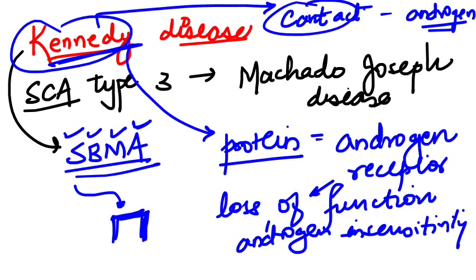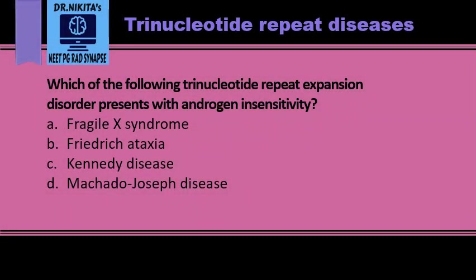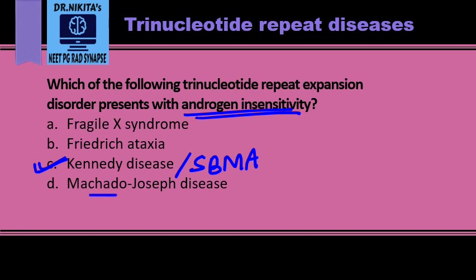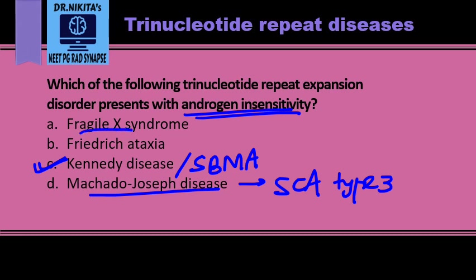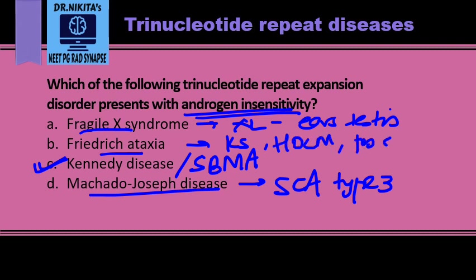A recently asked question: which trinucleotide repeat expansion disorder presents with androgen insensitivity? The answer is Kennedy disease, which is spinal and bulbar muscular atrophy. Recap: Machado-Joseph disease is spinocerebellar ataxia type 3; Fragile X has XL-size ears, testes, and jaw; Friedreich's ataxia has kyphoscoliosis, hypertrophic cardiomyopathy, and pes cavus.